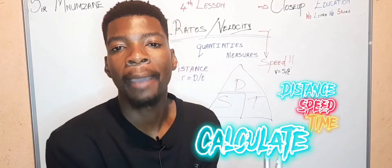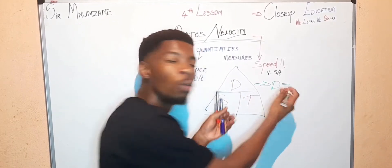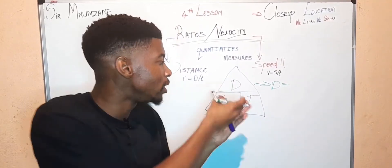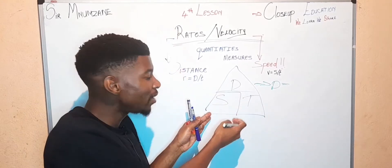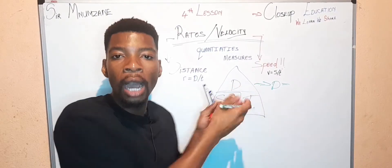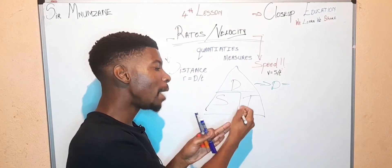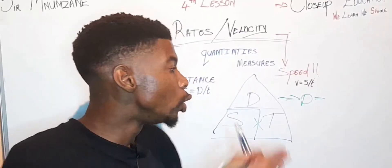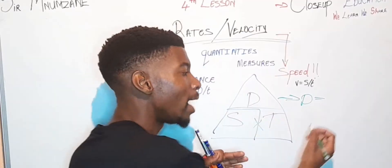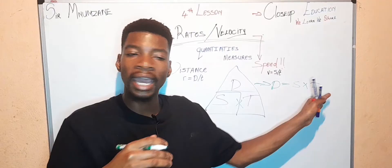For distance: we want our distance, so what's left in the diagram is speed and time. Since neither is the numerator or denominator of the other, they have to multiply. So distance equals speed multiplied by time.